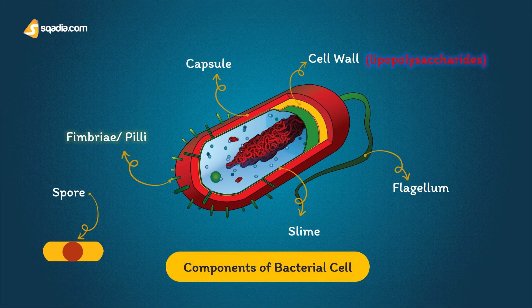Fimbriae or pili are specialized thin projections that aid adhesion to host cells. Escherichia coli, which causes urinary tract infections, binds to mannose receptors on ureteric epithelial cells by their P. fimbriae. Fimbrial antigens are often immunogenic but vary between strains so that repeated infections may occur — for example, Neisseria gonorrhea.